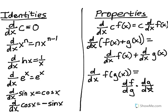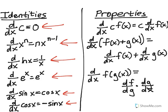At this point in the lesson, you should know all of the identities and properties shown on this screen. The identities are what allow you to remove the d/dx symbol — they get rid of the derivative symbol and replace it with a straightforward algebraic statement. We have: derivative of a constant is 0, the power rule, derivative of a natural log is 1 over x, derivative of e to the x is e to the x, derivative of sine x is cosine x, and derivative of cosine is negative sine.